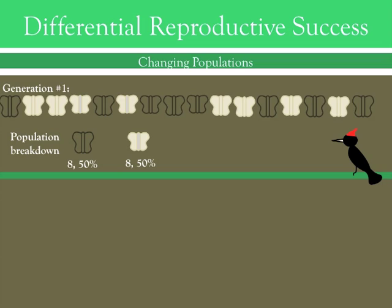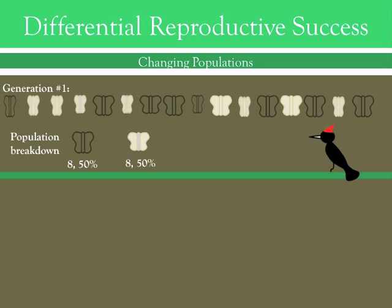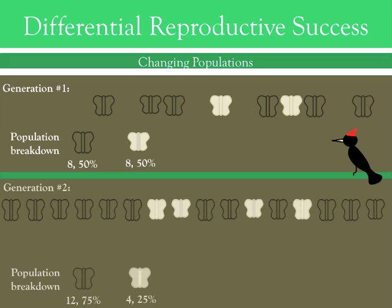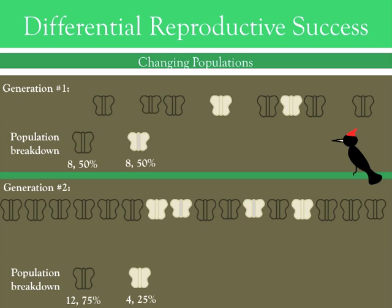However, if not all of the individuals in the population successfully reproduce, then natural selection will begin to occur. Those individuals with greater reproductive fitness will stand a greater chance of surviving and producing viable offspring. Because their fitness was genetically determined, their offspring will also share this fitness. In this particular case, darkly colored moths are more fit because they are harder for a predatory bird to see and eat. As a result, the population of moths in this environment will shift towards a greater prevalence of dark moths.